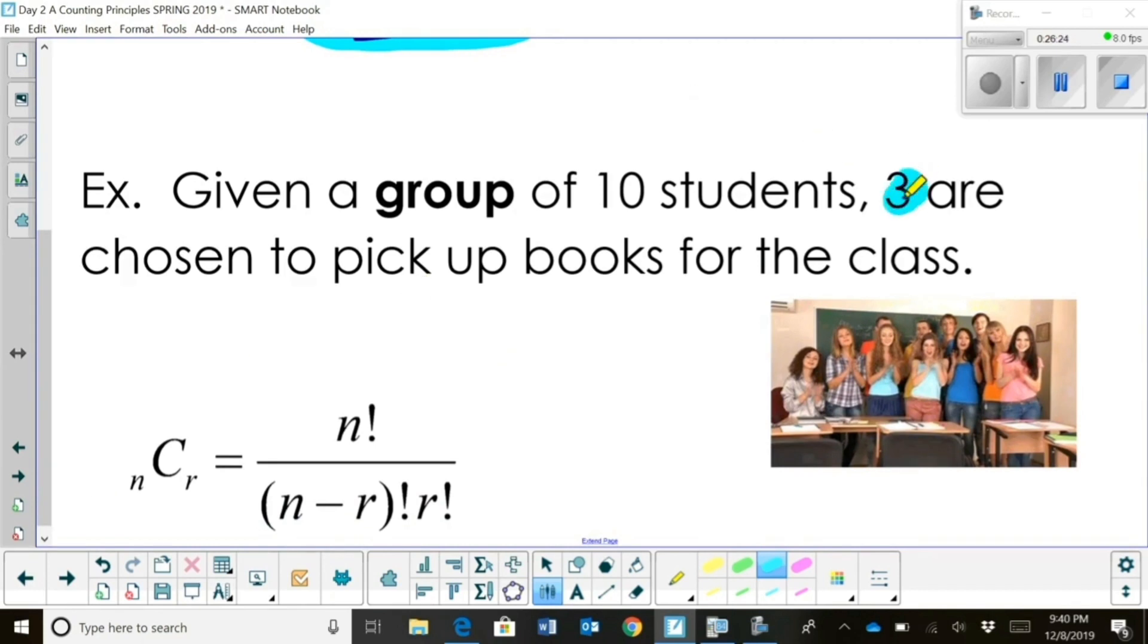Okay, so we're choosing a group of three students to go pick up books. That group of three is the same group of three, whether I pick Sally first and Eddie and John, or if I pick John first and then Sally and Eddie, it doesn't matter. It's one group of students. So, anytime you have a group where the order doesn't matter, that one's a combination.